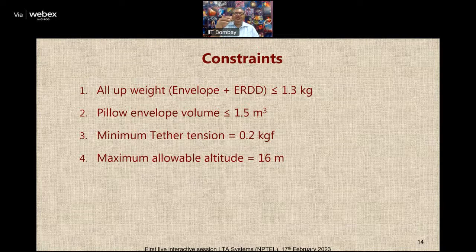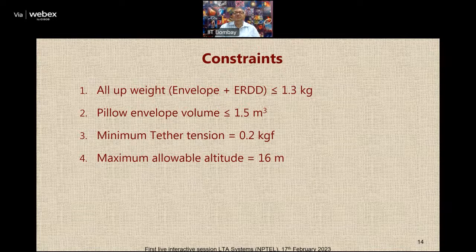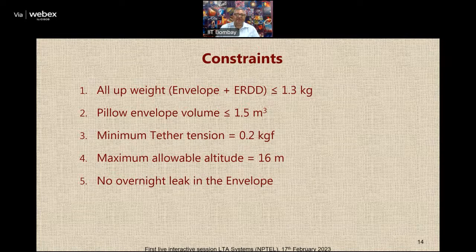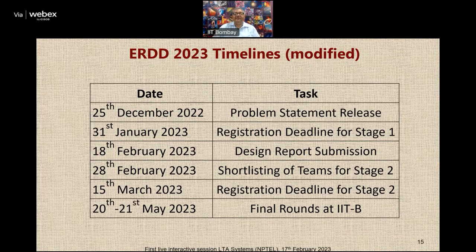We want the tension in the tether to be at least 0.2 kilogram-force or 200 grams. After the tether is cut the aerostat should rise, and within 16 meters altitude the device should operate and bring it down. The reason for this limit is that we are doing the competition indoors — in an indoor fire we have a maximum height of around 65 feet, which turns out to be 16 meters. To ensure we don't waste gas, we are going to first check that the envelope is leak-proof: fill it and keep it overnight, and next morning if there is massive leakage we will disqualify the team to avoid wasting helium.